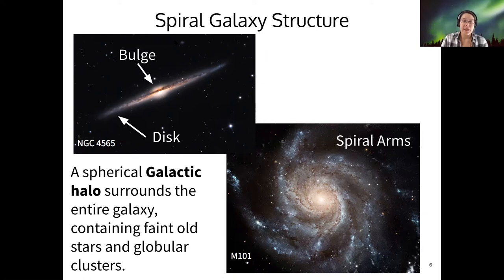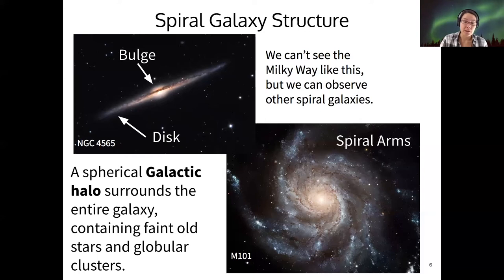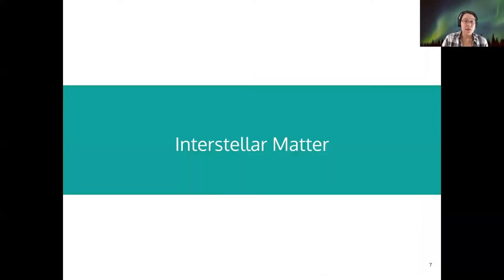And of course, we cannot take any pictures of our own Milky Way galaxy from outside, but we can observe other spiral galaxies and suppose that the Milky Way shares many characteristics with other spirals. So that's the overall structure of Milky Way.